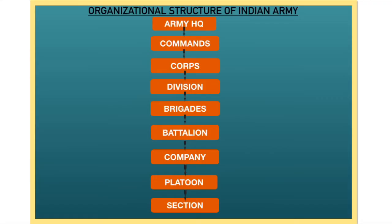One more example of Weber's bureaucratic theory is the organizational structure of the Indian Army. First comes the army headquarters, then the commands — Eastern command, Western command, Northern command, etc. Then come the corps, then divisions (approximately 37 divisions), then brigades, then battalion, then company, then platoon, and last is the section. This is one of the best examples following both organizational hierarchy and rational legal decision making rules.